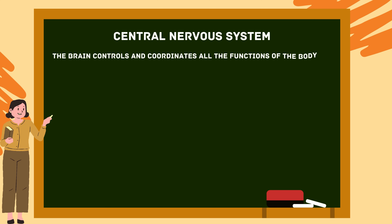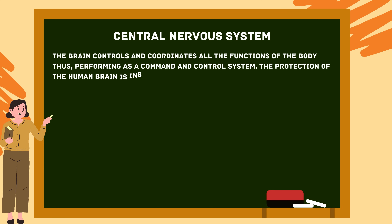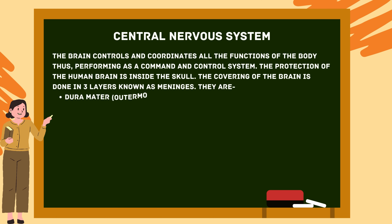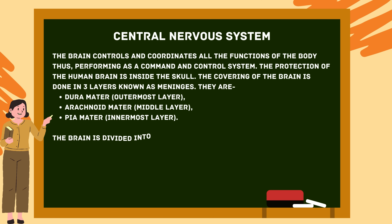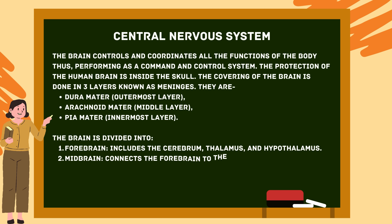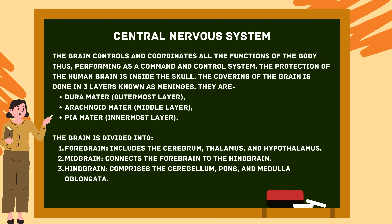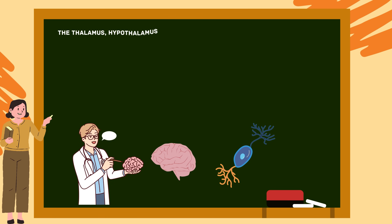The brain controls and coordinates all the functions of the body, acting as a command and control system. The human brain is protected inside the skull and is covered by three layers known as meninges: the dura mater (outermost layer), the arachnoid mater (middle layer), and the pia mater (innermost layer). The brain is divided into the forebrain — which includes the cerebrum, thalamus, and hypothalamus — and the midbrain, which connects the forebrain to the hindbrain.